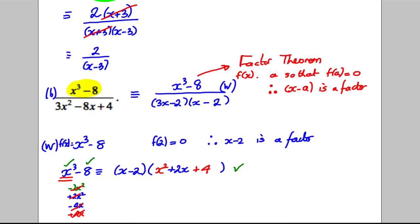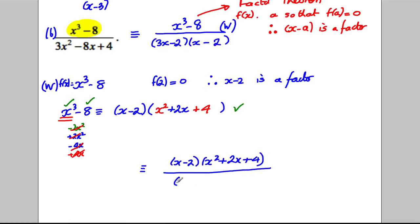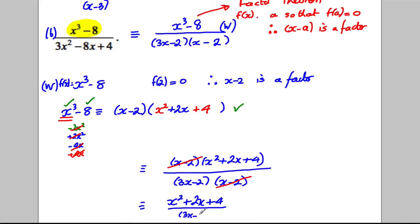Going back to the original question, it's therefore equal to (x - 2)(x² + 2x + 4) all divided by (3x - 2)(x - 2). The common factor of (x - 2) on top and bottom cancels, giving a final answer of (x² + 2x + 4) divided by (3x - 2). I can't factorize that further, so that is the final answer.